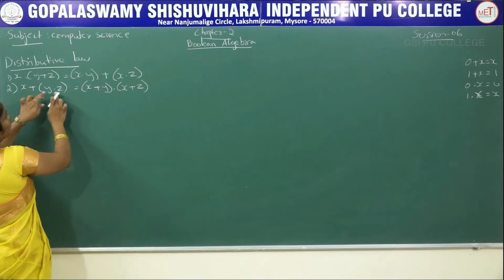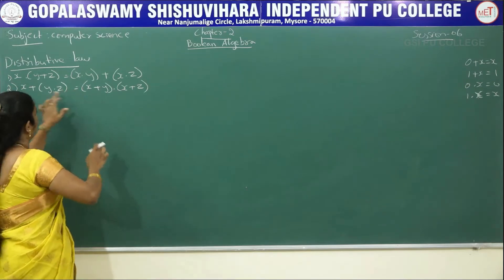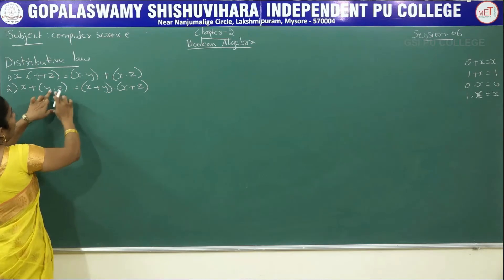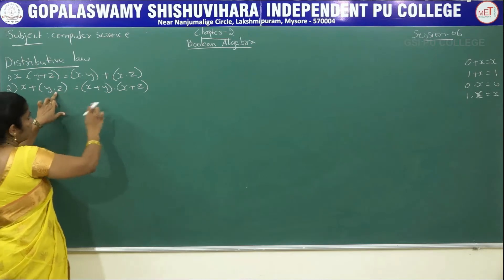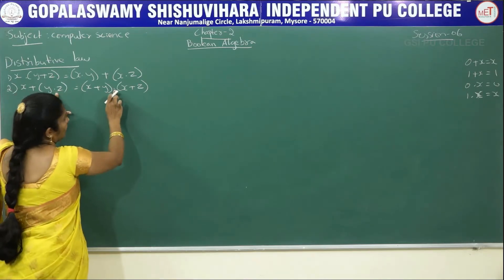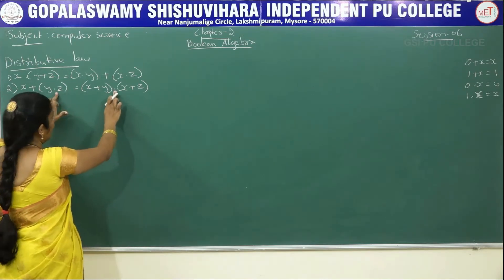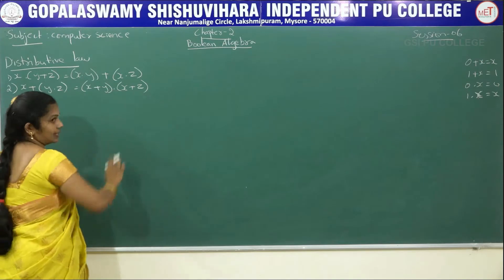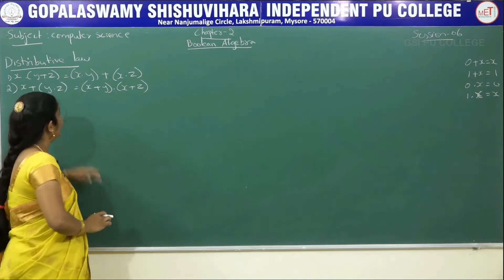The second distributive law states that x plus (y into z) equals (x plus y) into (x plus z). Whatever operator we have in between, it distributes accordingly.